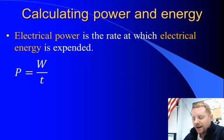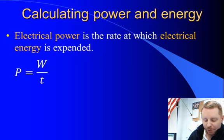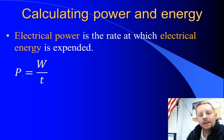Electrical power is the rate at which electrical energy is expended. So power, which is a measure of how quickly electrical energy is used, the rate is equal to the work or the energy in joules divided by the time in seconds. And the units of power are going to be watts, just like they were when we talked about mechanics. So that's a joule per second.